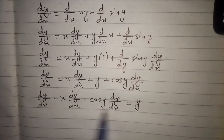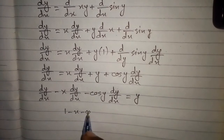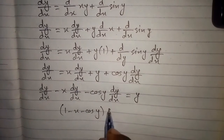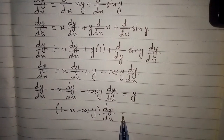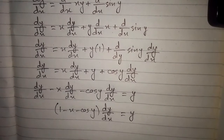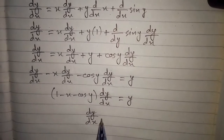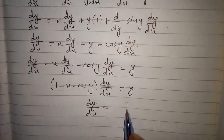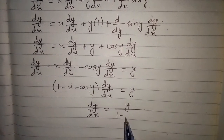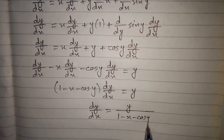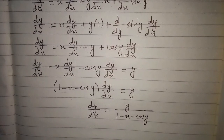Now we can factor out dy/dx and take that factor to the other side of the equation, writing it in the denominator. So we have dy/dx equals y divided by (1 minus x minus cos(y)). The derivative is y upon 1 minus x minus cos(y).